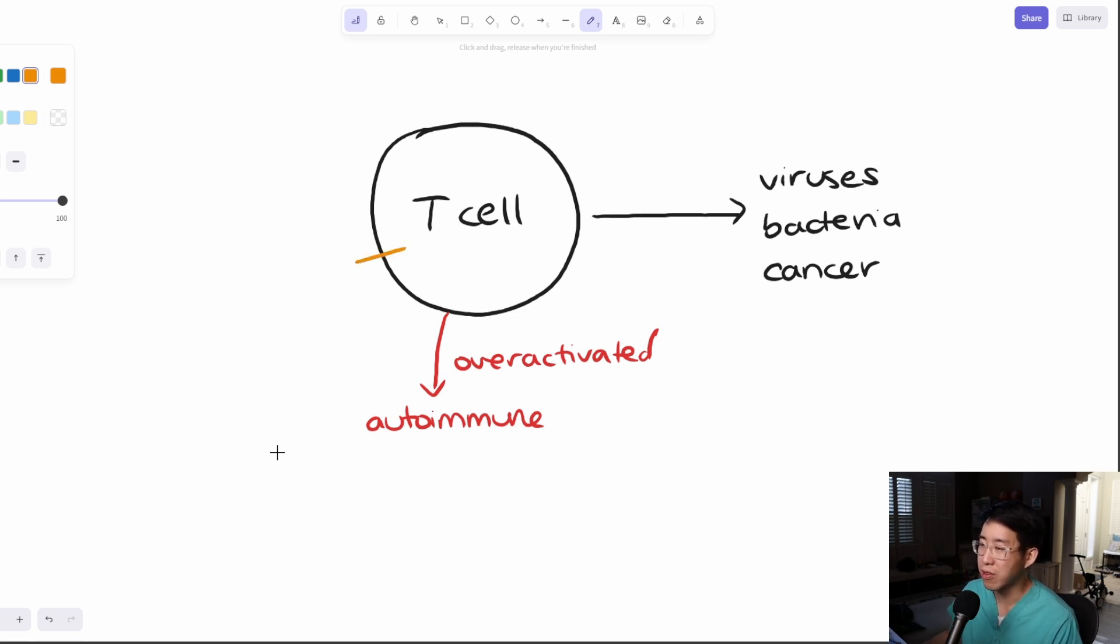And so what we have on the T cells are these things called immune checkpoints. And the immune checkpoints are essentially ways that the immune system can turn off the T cells. So you have the CTLA-4 receptor, you have the PD-1 receptor, and on other cells, you can have this thing called the PD-1 ligand. And so these are ways to shut off the T cell.